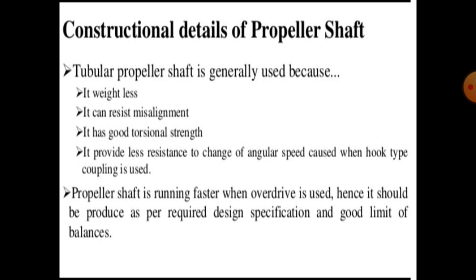Tubular propeller shaft is used because it weighs less, it can resist misalignment, it has good torsional strength, and it provides less resistance to change in angular speed caused when hook-type coupling is used. The propeller shaft runs faster when overdrive is used; hence, it should be produced as per required design specification and good limit of balance. These are the simple reasons why the propeller shaft is tubular or hollow.